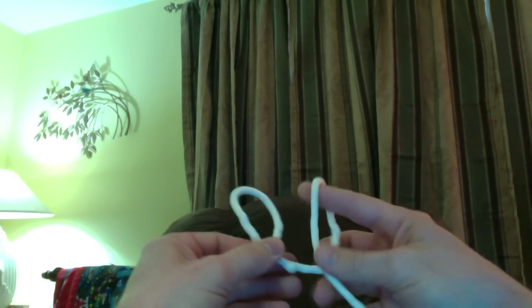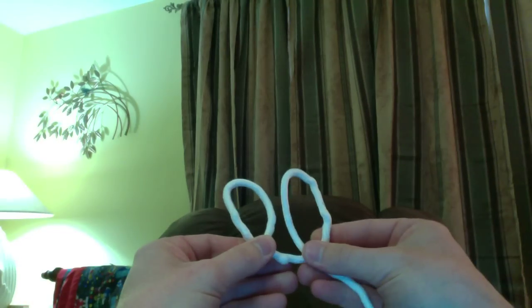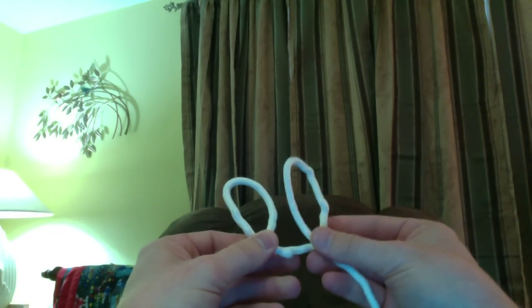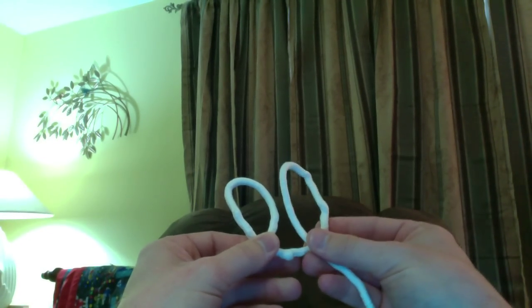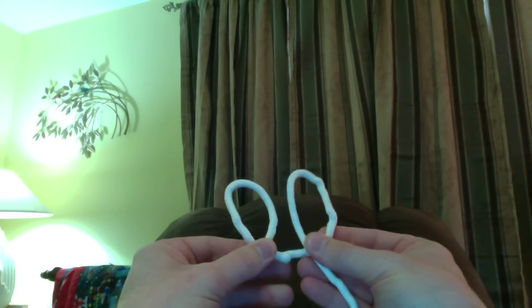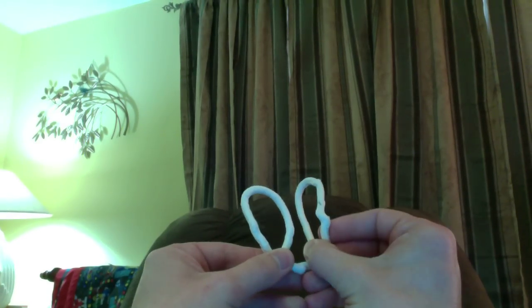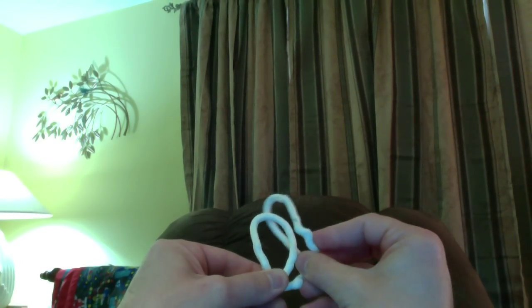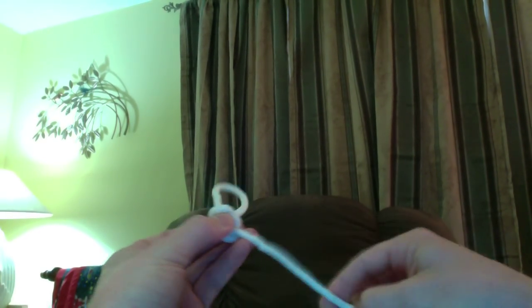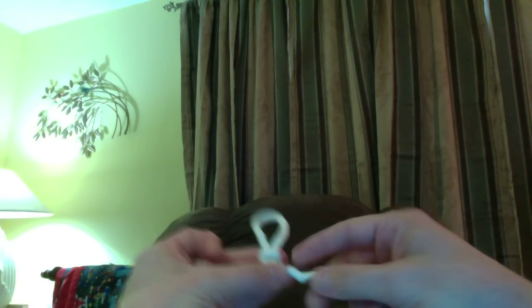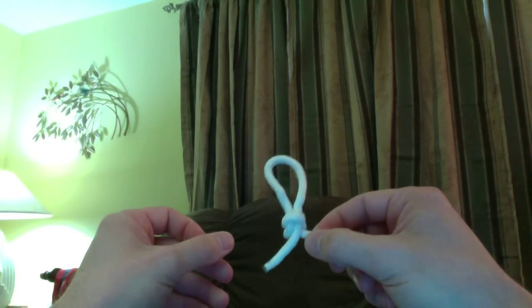Then we make a second loop with our right hand, and this time the long end is on top of everything else. Now at this point, you want to make sure that you turn the right hand loop to the left and then put it over your left hand loop, and pull like so. There is your knot.